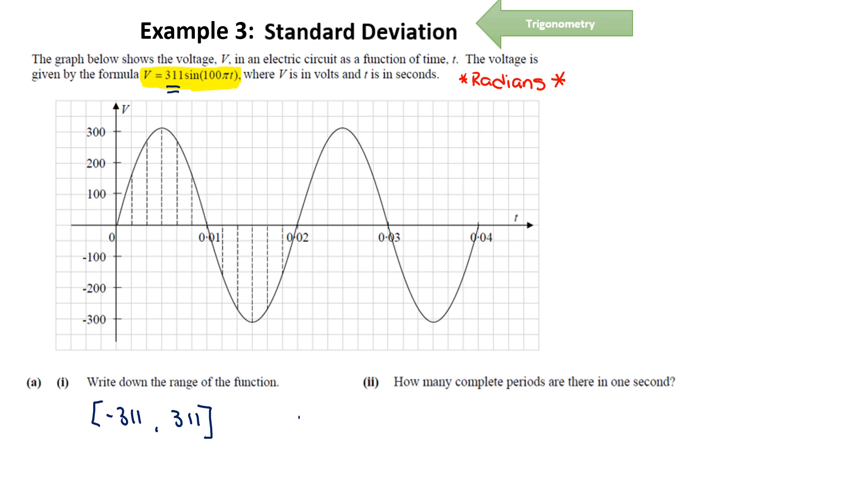How many complete periods are there in one second? So a complete period is how long it takes to do a rotation. So if we follow the graph, that's one rotation. So we have one rotation and that is 0.02 seconds. So 1 divided by 0.02 is equal to 50. So therefore 50 periods per second.